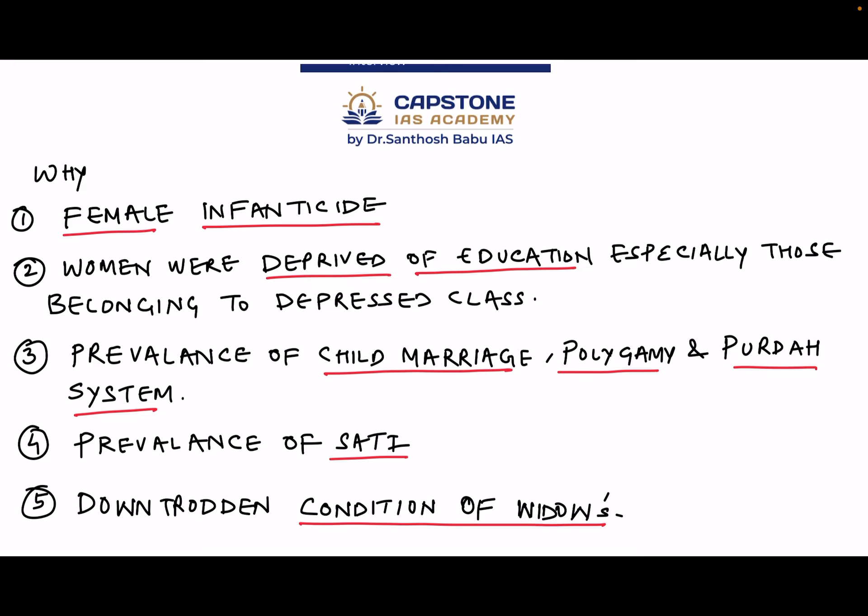Point three: the prevalence of child marriage, polygamy, and the purdah system. Women not just of the Hindu religion but of other religions also faced certain atrocities, which led to social reform movements for women. Point four: the prevalence of sati. Point five: the downtrodden condition of widows, especially child widows — girls subjected to child marriages who faced widowhood at a very early age and were not able to remarry.